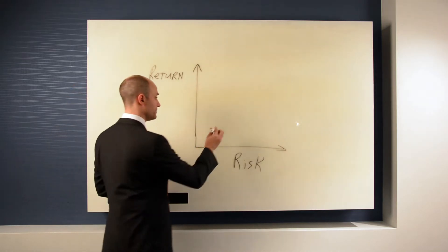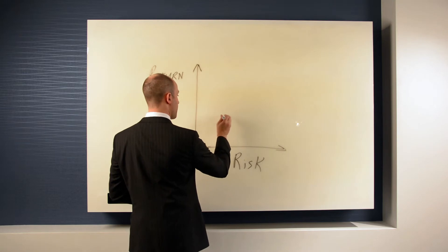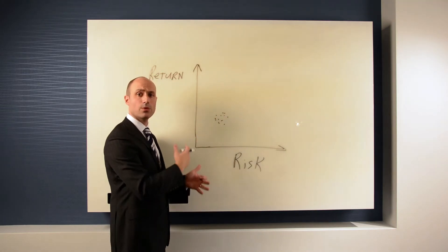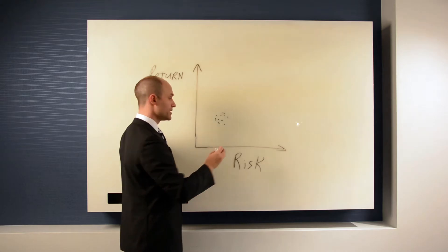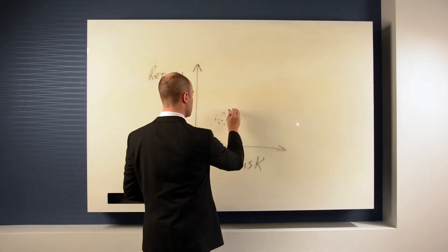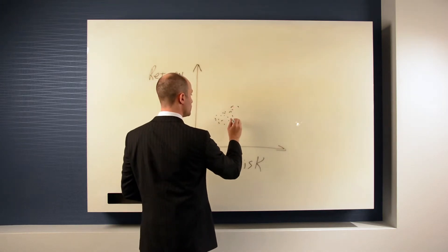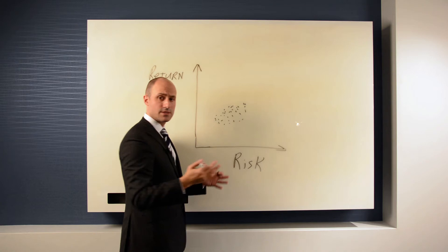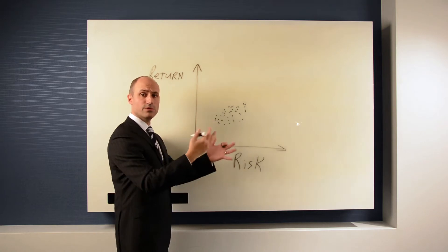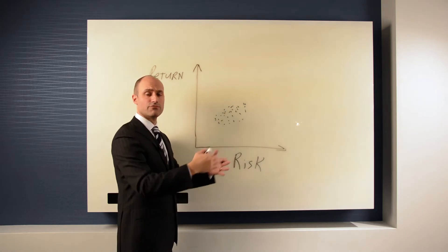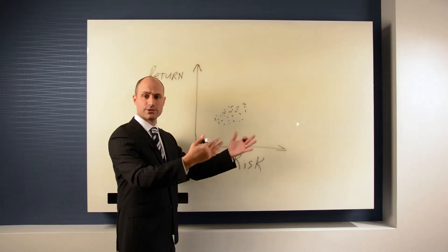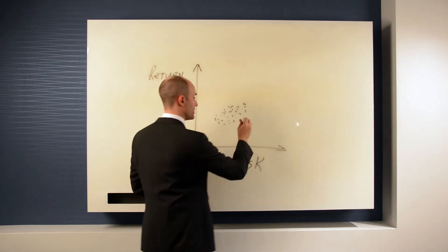We'll start off with plotting some bonds, and then we'll move into some riskier assets — some stocks — and then we'll move into even riskier assets like tech shares, biotech, or things like that.